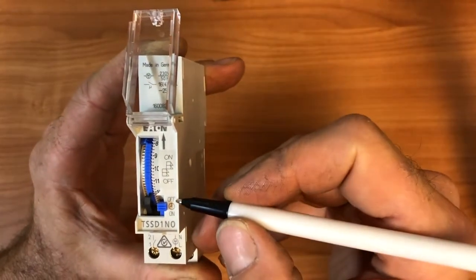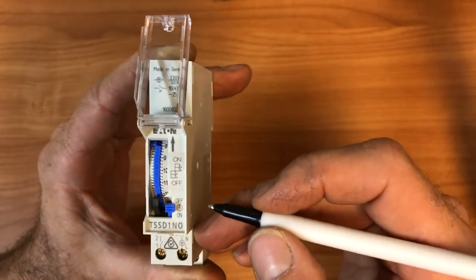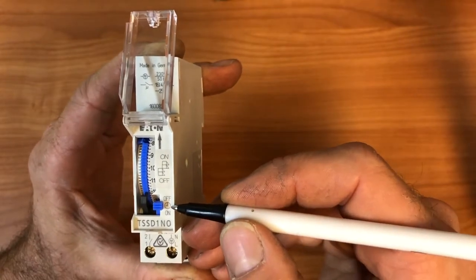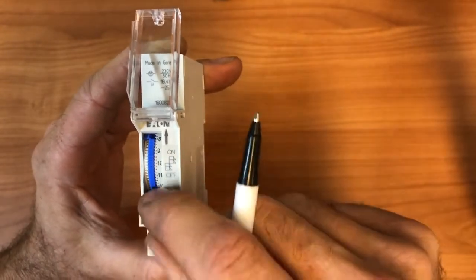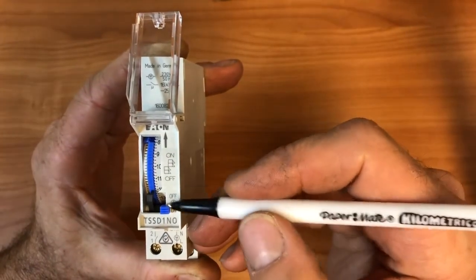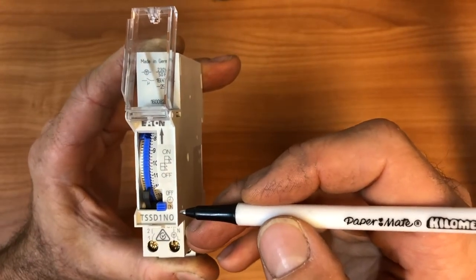So in the off position, the load which is controlled by the timer is always going to be off. In the clock position, it's controlled by the timer. In the on position, the timer is bypassed and the load is always on.